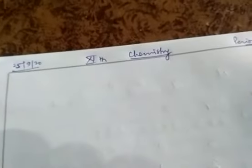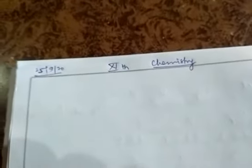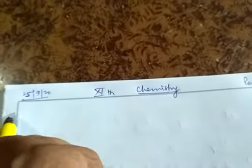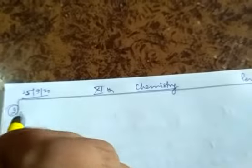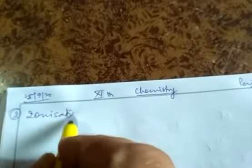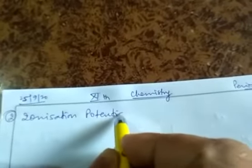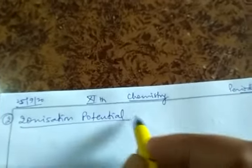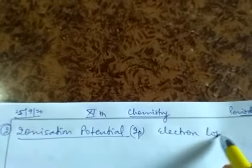KK Mishra chemistry video for class 11th. Today we discuss the periodic properties, specifically the third property: ionization potential, IP, also called electron loss enthalpy.